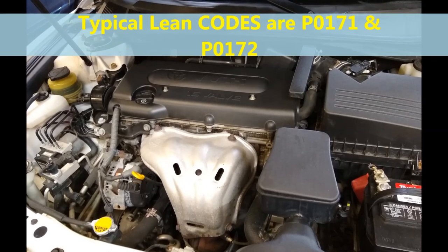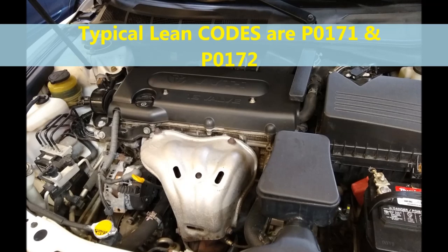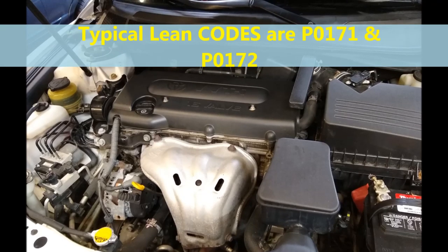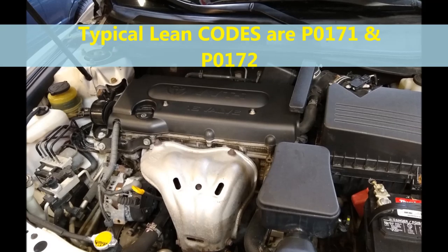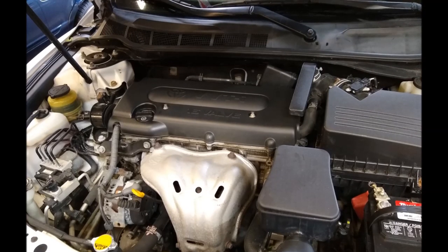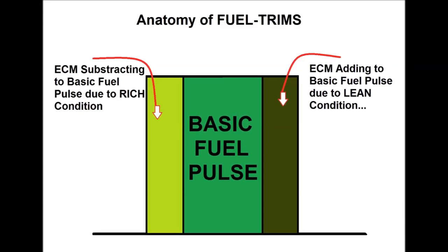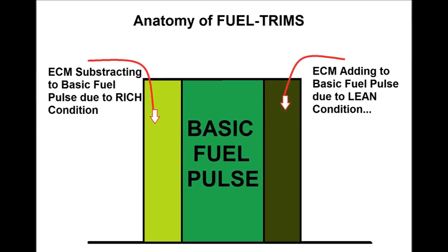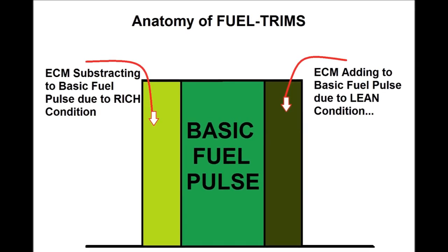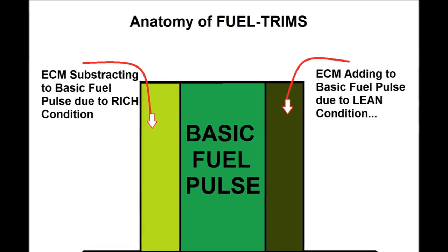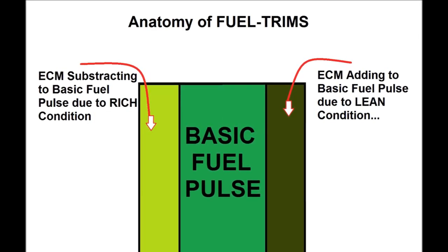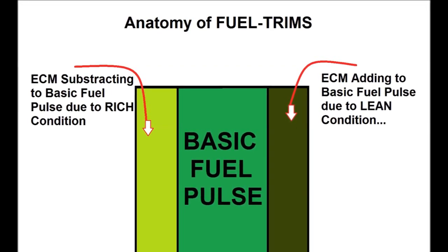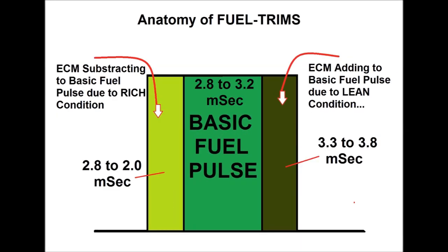As you can see on screen, this is the four-cylinder found in this particular Toyota. Lean conditions are usually related to vacuum leaks, though not always. The center green square on screen shows the basic fuel pulse — the value the ECM starts with. Just for the sake of argument, let's say a basic fuel pulse is around 3 milliseconds, which is typical. This varies depending on the engine and system you're working on.